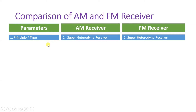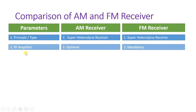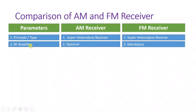Both AM and FM receivers function as per the superheterodyne receiver principle, where transmission occurs at a higher frequency and signal processing is done at a lower frequency. On that principle, the superheterodyne receiver is functioning, and both AM and FM receivers work with superheterodyne type receivers only.